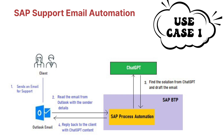Our first use case will be SAP Support Email Automation. Here, we'll be using SAP BTP Process Automation Service to read Outlook support emails sent by any client. We'll read the body of the email and find out exactly what the problem is. Then we'll use the ChatGPT API built with Python to process and find the solution, which will be sent back to the client as an email reply using Process Automation.